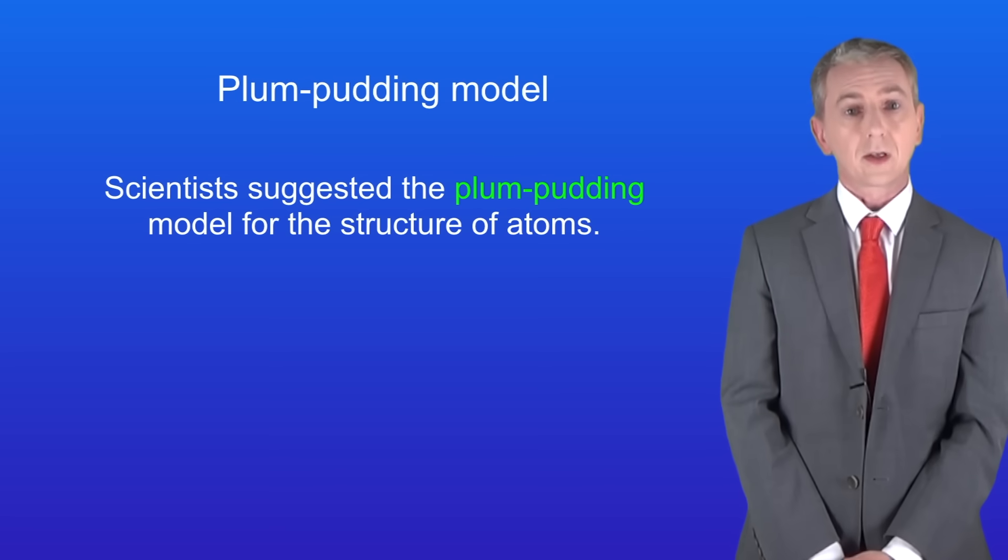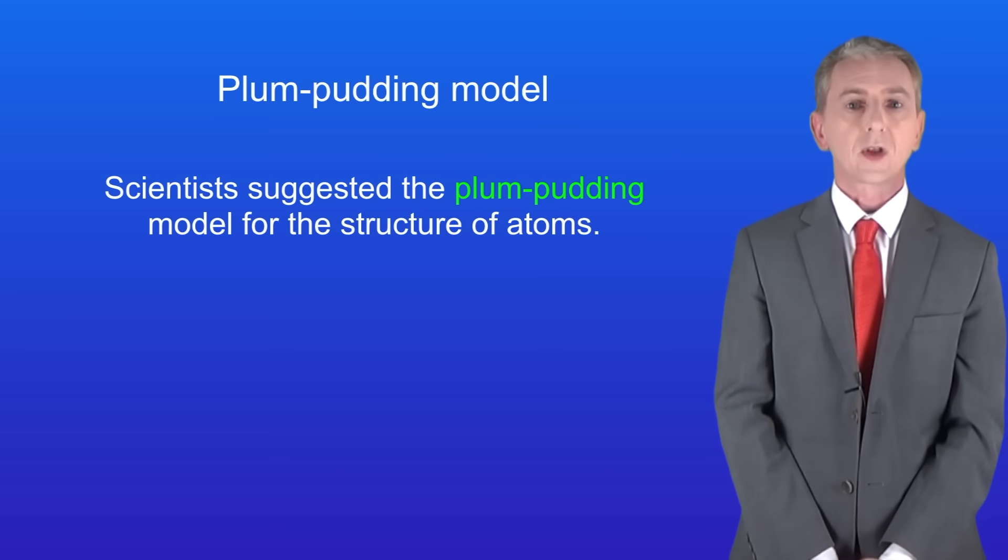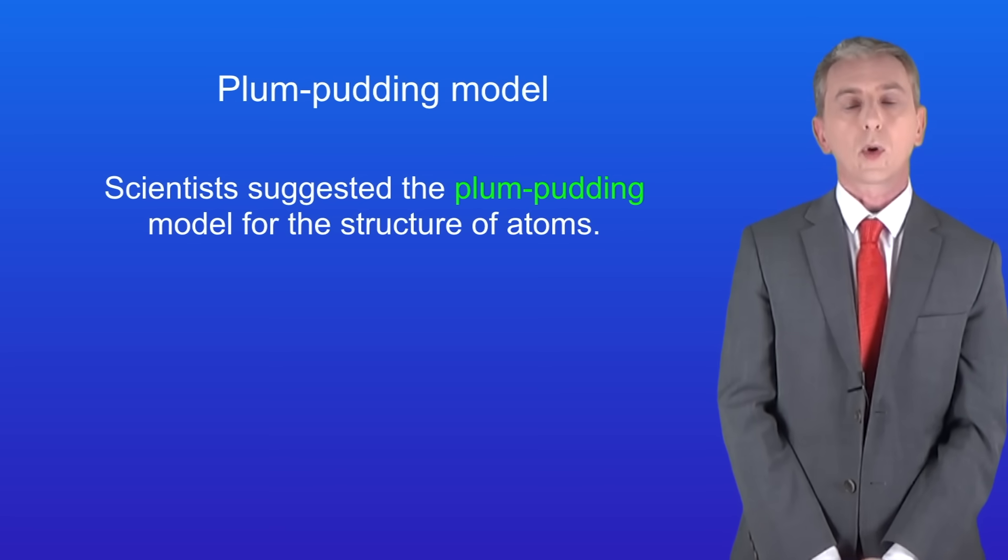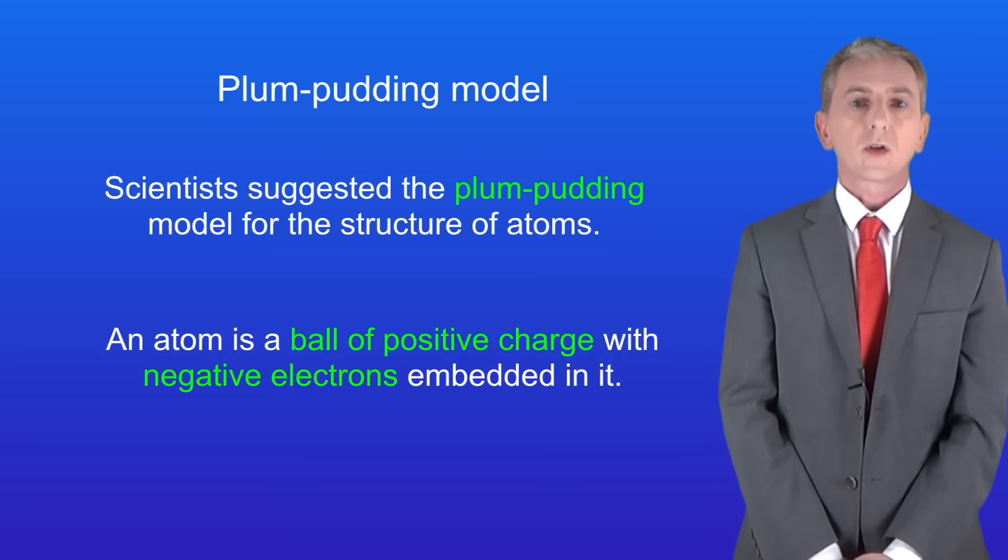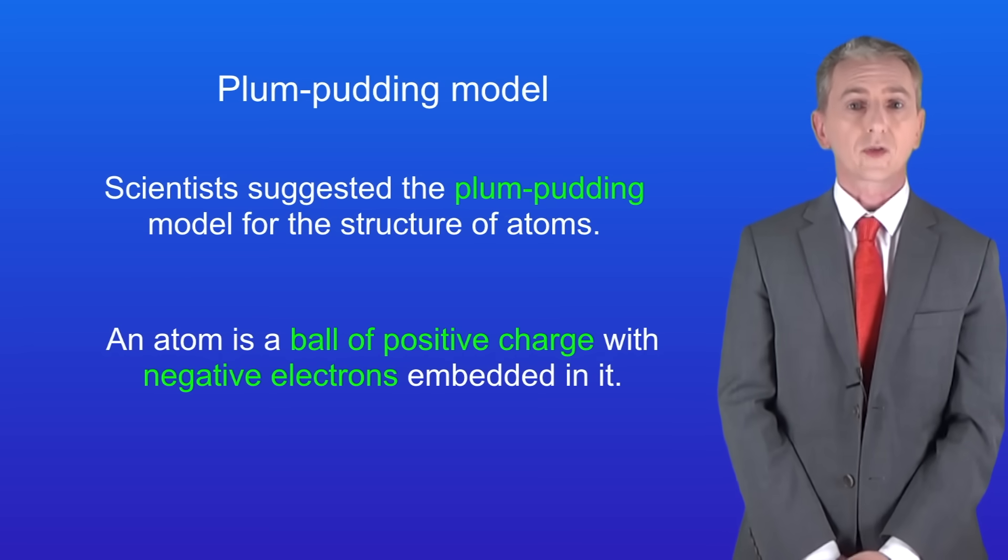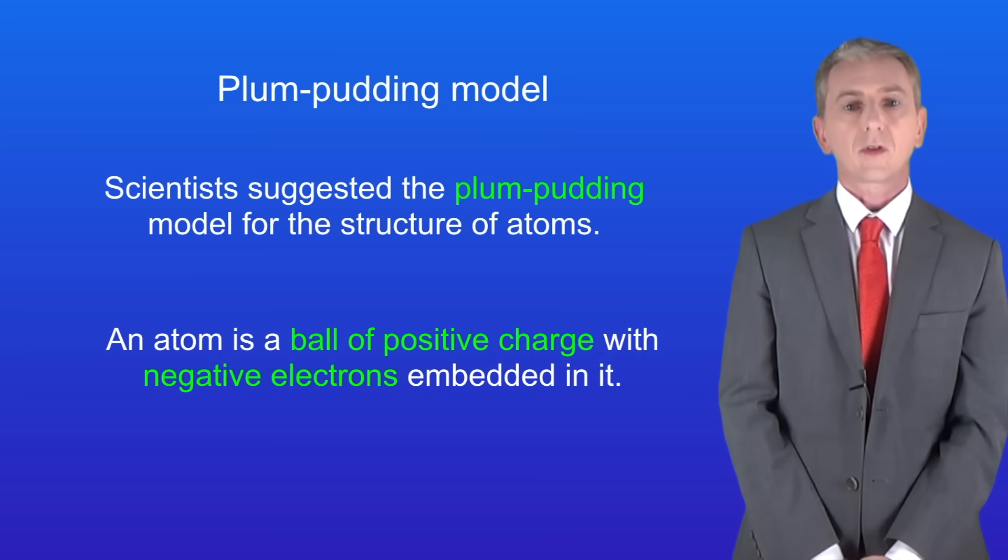So scientists now suggested a different model for the structure of atoms called the plum pudding model. The plum pudding model suggested that an atom is a ball of positive charge with negative electrons embedded in it.